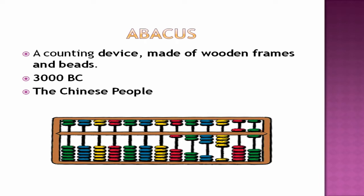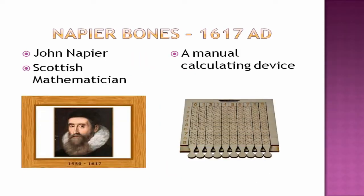Next comes Napier Bones. It was developed in 1617 AD by John Napier, who is a Scottish mathematician. Napier Bones is a manual calculating device.